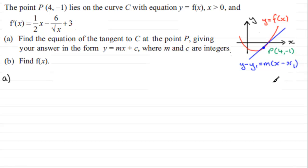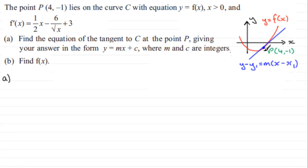So I know x1 and y1: x1 is 4 and y1 is -1 from point P. All I've got to get is m, the gradient. I can get m very easily because m is given by the first differential f'(x) — you might think of it as dy/dx. So all I need to do is find the gradient at the point where x is 4, in other words f'(4).